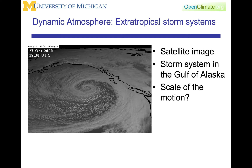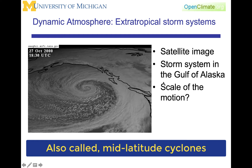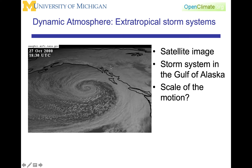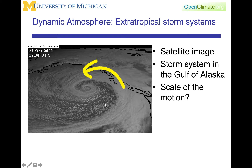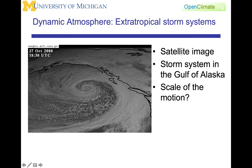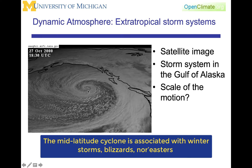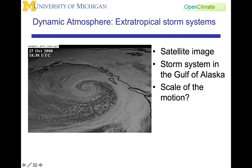The weather that dominates North America and the continental United States are extratropical storm systems, often called mid-latitude storms. This is a satellite image of a storm system in the Gulf of Alaska. You can see this system because of cloud and water vapor, which provides a proxy of the motion. Like the hurricane, you see this swirling motion into a low-pressure system. But distinct from the hurricane, you don't really see an eye forming. The dynamics of these mid-latitude systems, strongly associated with winter storms, are quite different from those of the hurricane.